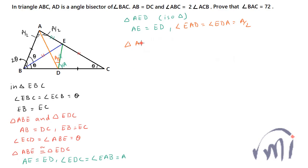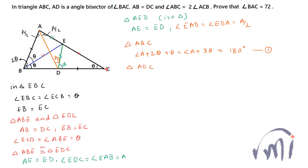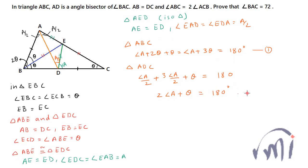In the original triangle ABC, the sum of interior angles equals 180 degrees: angle A plus 2 theta plus theta equals 180, so angle A plus 3 theta equals 180. Call this equation 1. In triangle ADC, angle CAD is A/2 and angle ADC is A/2 plus A, so 3A/2 plus theta equals 180. That gives 2A plus theta equals 180. This is equation 2.